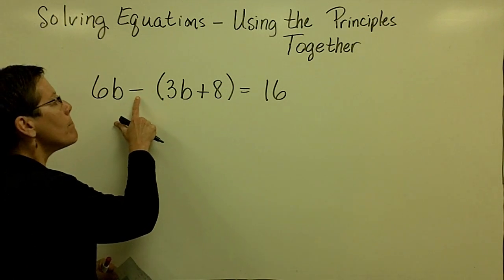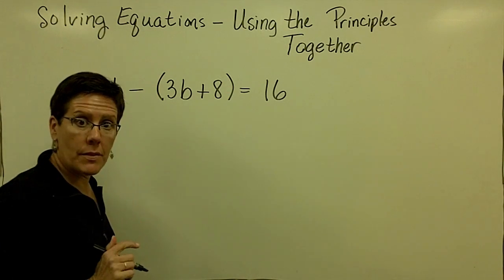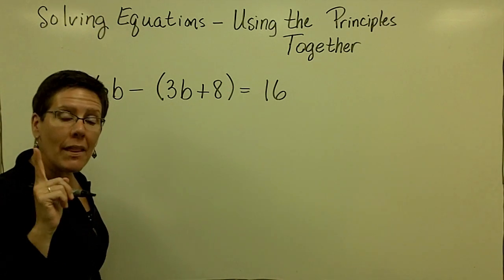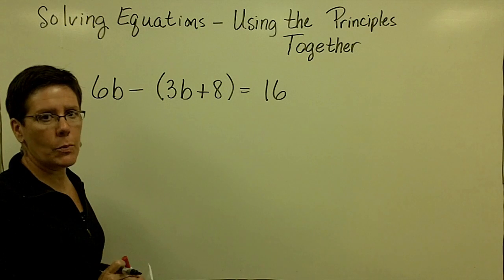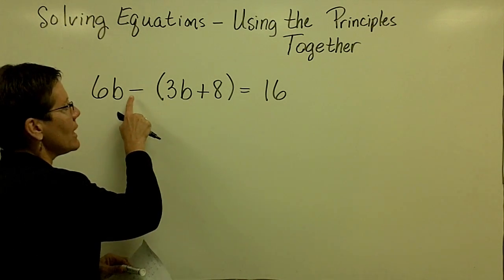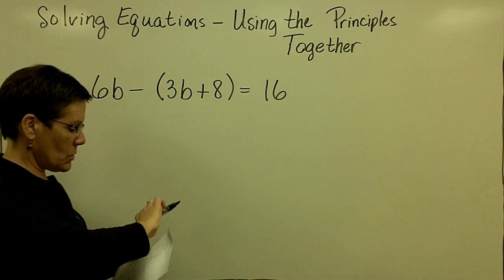This reads 6B minus all of what's in the parentheses there. You can think of it in one of two ways. You can think of it as me asking you to add the opposite. Let me just write this.